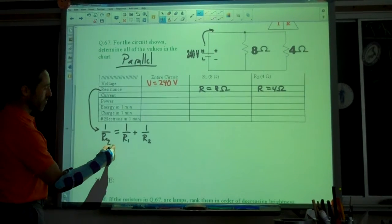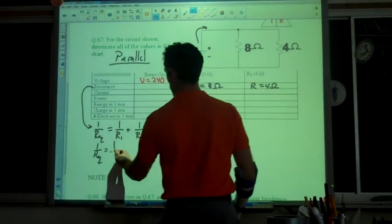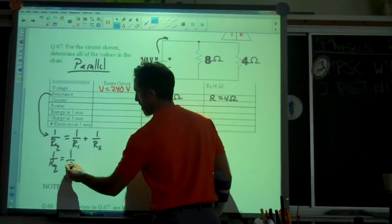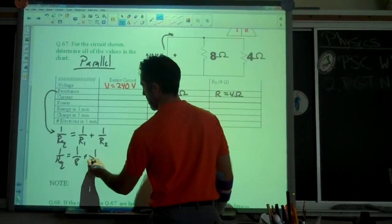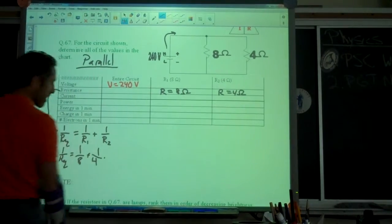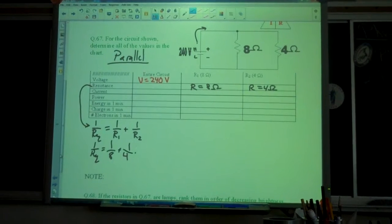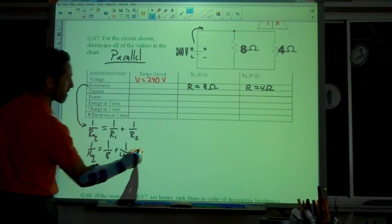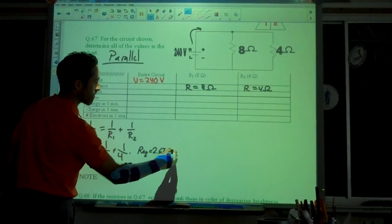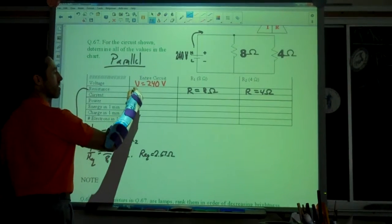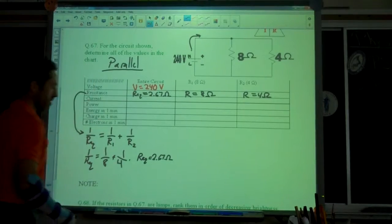Let's come back over here. So we have one over REQ equals one over eight plus one over four. You can do it however you want. You want to do a common denominator, that works out. It will be one over eight plus two over eight. You get three over eight. You got to flip it. Eight over three. So your REQ becomes 2.67 ohms. So we come in here. The equivalent resistance, REQ, 2.67 ohms. Cool.